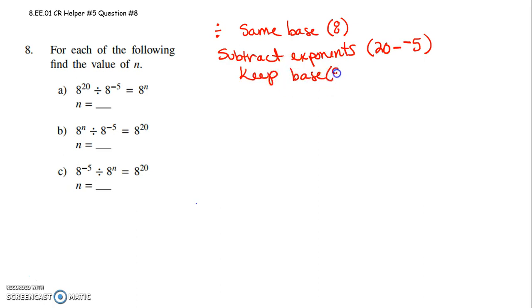Alright, it's our rule. When we're dividing with exponents, we subtract those exponents and we keep the base. So 8 to the 20th divided by 8 to the negative 5th, we keep our base of 8 and we subtract our exponents. So we do 20 minus a negative 5. 20 minus for subtraction, and that 5 happens to be a negative.